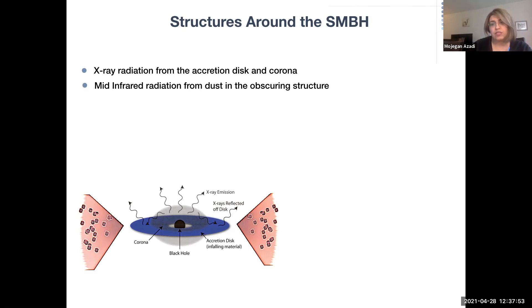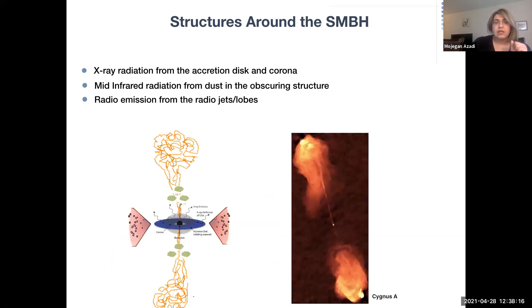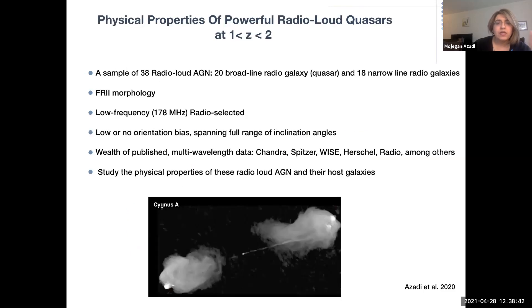Some UV and optical photons from the accretion disk get absorbed by dust grains in the torus and are reprocessed and re-radiated at longer wavelengths, such as mid-infrared. The distribution of dust in the torus has been the subject of many studies. Earlier studies proposed a homogeneous structure with dust smoothly distributed in a toroidal disk, then studies moved towards clumpy models, and recent studies find that models combining both features can successfully reproduce the mid-IR spectra of AGN. The accretion process can sometimes form huge jets of strong magnetic fields emanating from around the black hole, growing into enormous sizes — sometimes extending far beyond the host galaxy. Only about 10 to 15 percent of the AGN population are able to launch such structures.